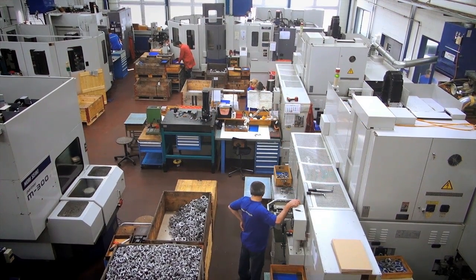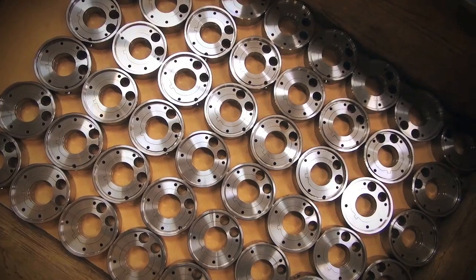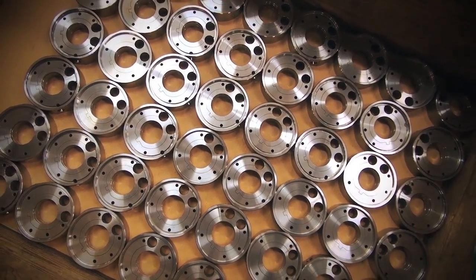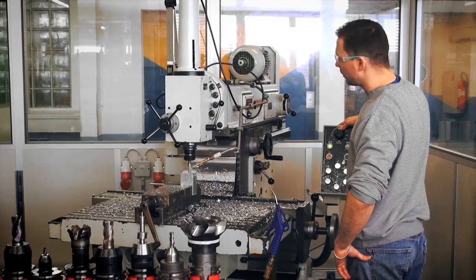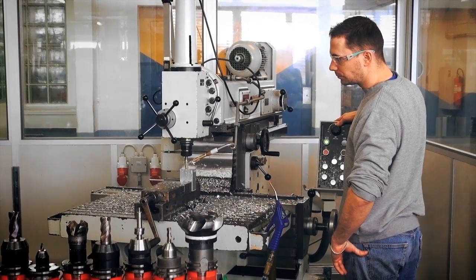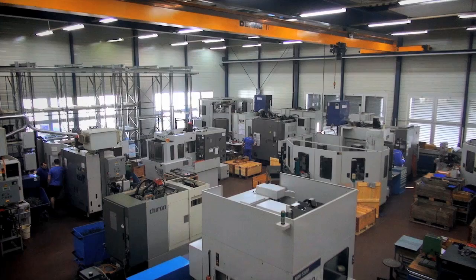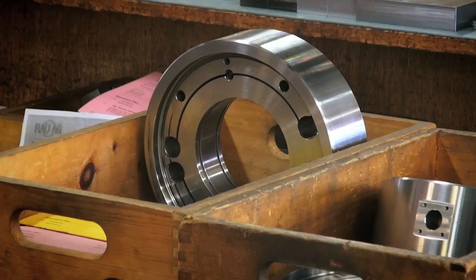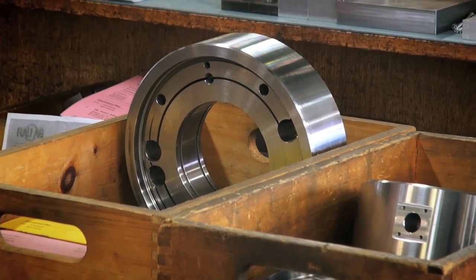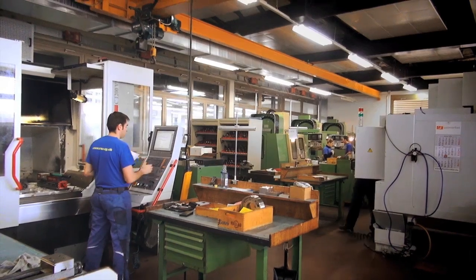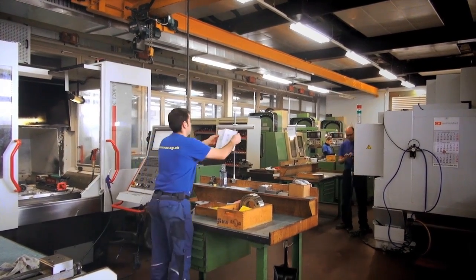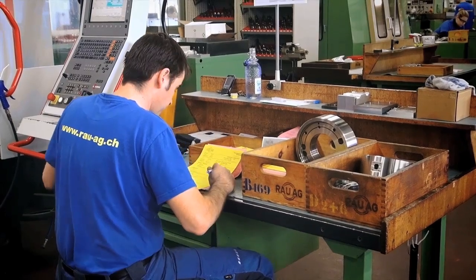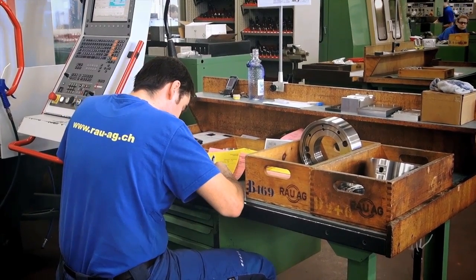Hardness testing is one of the oldest and most commonly applied inspection methods for metallic materials. One reason for this is that hardness itself is a useful material parameter. Another reason is that there are more or less direct relationships between hardness and other important material properties that are much more difficult to measure directly, such as tensile strength, yield strength or fatigue behaviour.